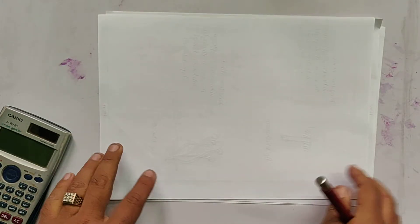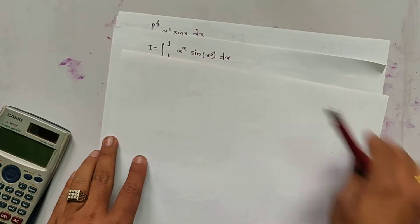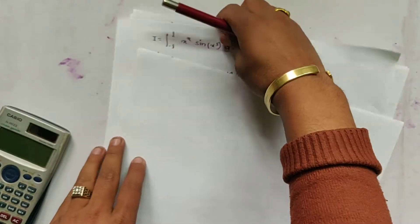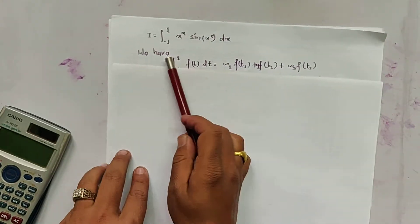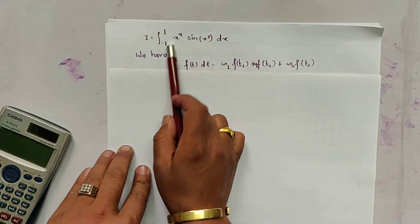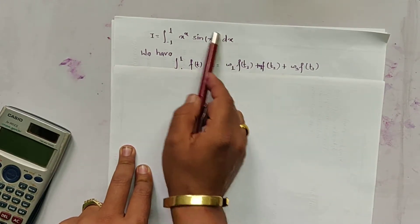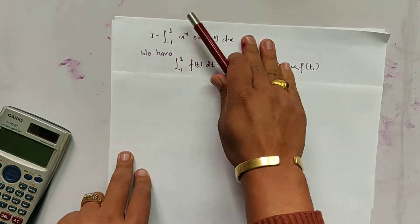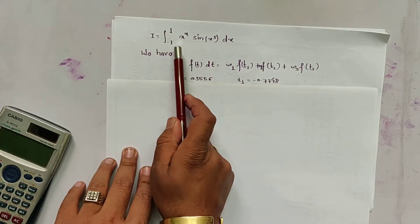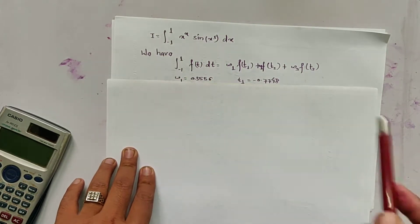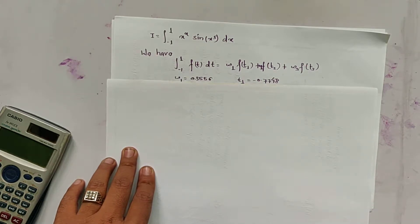Namaste. In this video we are going to solve an example for Gaussian 3-point form and Gaussian 4-point form. Let us consider the example: calculate the integration from limit minus 1 to 1 of x^x * sin(x^5) dx. This is f(x). Since the limit is already minus 1 to 1, we do not have to change the limit.